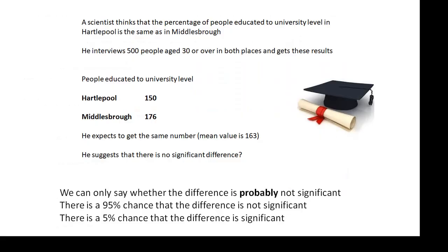Another example: a scientist thinks that the percentage of people educated to university level in Hartlepool is the same as in Middlesbrough. He interviews 500 people aged 30 or over in both places. In Hartlepool there are 150 people; in Middlesbrough there are 176 people. He expects to get the same number, so our expected value is 163, which would be the average of the two. He suggests there is no significant difference, and looking at the numbers you would probably agree, but again we need a mathematical way of testing if there is no significant difference.